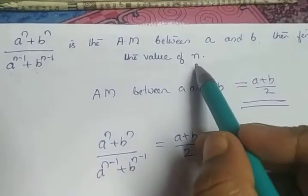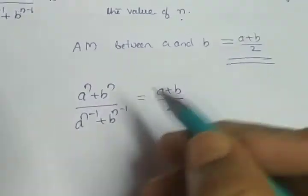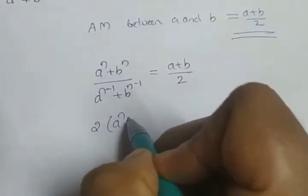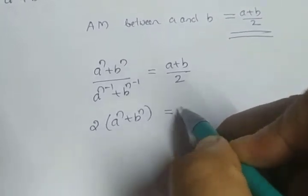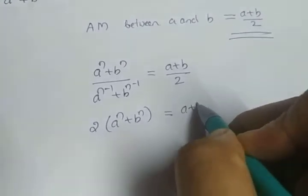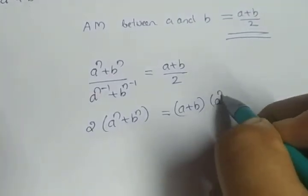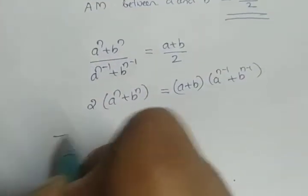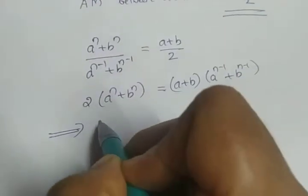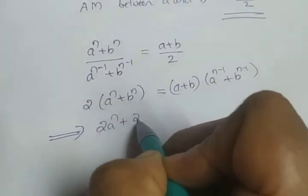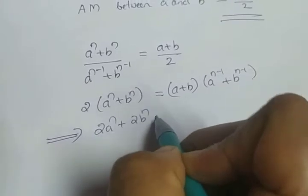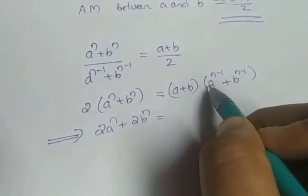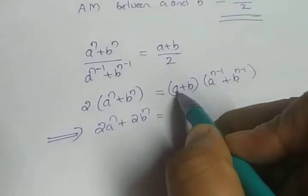To simplify and find the value of n, we cross-multiply. What we get is: 2 into a raised to n plus b raised to n, is equal to a plus b into a raised to n minus 1 plus b raised to n minus 1. Now we open the bracket — 2 times a raised to n plus 2 times b raised to n equals the expanded right side. We multiply the bracketed terms with a.